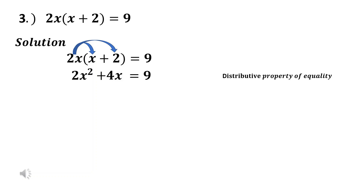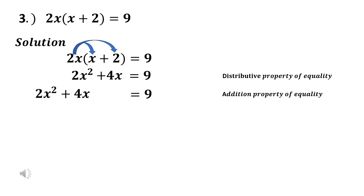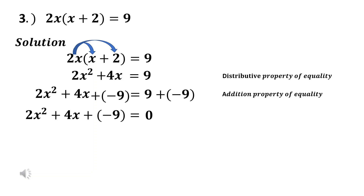Next, we need to transpose 9 to the other side to form the standard form. We use the addition property of equality by adding the inverse of positive 9, which is negative 9, to both sides. So we have 2x² + 4x - 9 = 0, which is the standard form of the given equation.